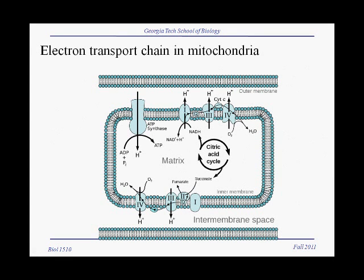A similar reaction occurs in our mitochondrial inner membranes. This is the outer membrane here, but this is the inner membrane. If you recall the structure of a mitochondrion, there is four times as much surface area of the inner membrane because the inner membrane is convoluted. The reason the inner membrane is convoluted is to have room for all of these electron transport chains.